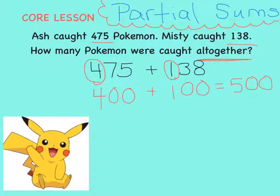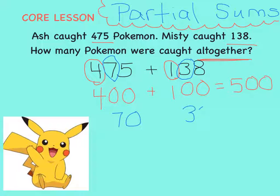Next, let's look at the tens place in each number. The seven has a value of 70. And the three has a value of 30. Together, 70 plus 30 equals 100.